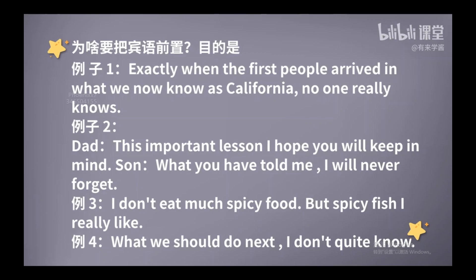而这句话为了强调宾语的内容，把when所引导的宾语从句提到了最前面。好，我们再来看一段对话。一位父亲在教育孩子，他提醒自己的孩子不要马虎大意，并且讲述了自己年轻时的一个教训。父亲语重心长地对孩子说，这个重要的教训，我希望你能够铭记在心。正常语序：I hope you will keep this important lesson in mind. 如果父亲要强调这个重要的教训，就可以把宾语给提前：This important lesson, I hope you will keep in mind. 如果孩子回答说，您告诉我的话我永远不会忘记，正常语序：I will never forget what you have told me. 如果要强调不会忘记的对象，同样可以把宾语前置：What you have told me, I will never forget.